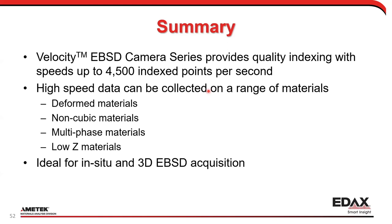For some materials, the indexing algorithm is the limiting factor, not the camera. For example, a complex magnesium-iron silicate (geological material) can only be indexed at around 900 patterns per second maximum — so there's no point going faster than that. On Hikari that same sample would run at 40 patterns per second. The Velocity lets you do essentially everything faster at similar beam currents, with the software as the speed ceiling for complex phases.